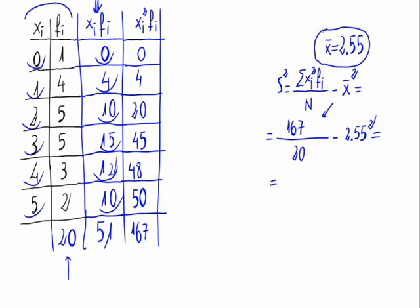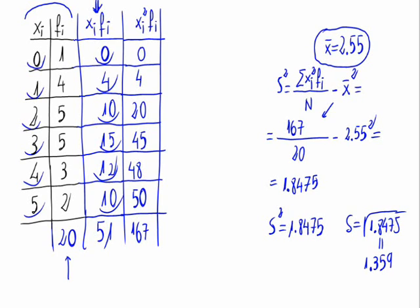And the standard deviation is the square root of the variance, and that's equal to 1.359. That way we've obtained the variance and the standard deviation of the statistic distribution given.